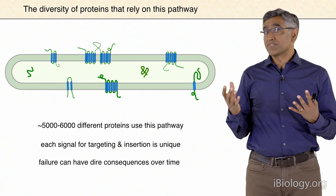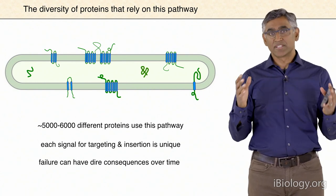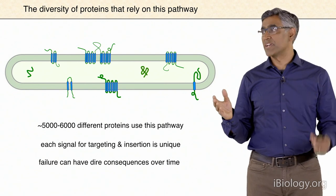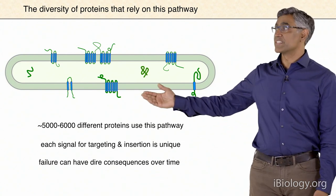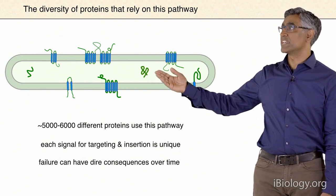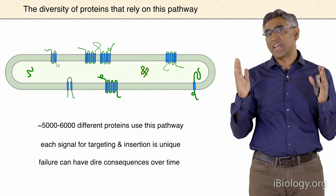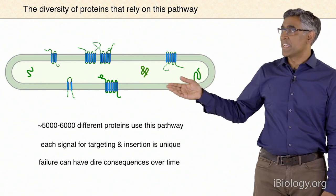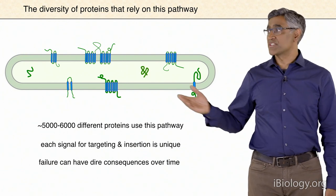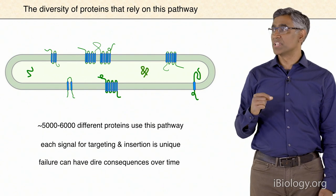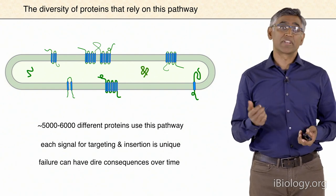This process has to occur not just for one protein but for literally thousands of different proteins. The signal recognition particle pathway is thought to deal with roughly 5,000 to 6,000 different proteins in our genome. These proteins vary considerably—some span the membrane once, many are secreted, many span the membrane multiple times—and every single one of those sequences is unique. So how do you get recognition of such a diverse range of sequences with reasonably high fidelity?